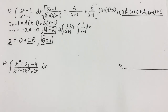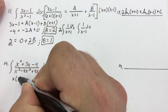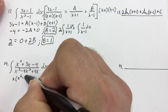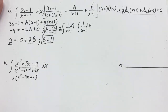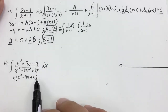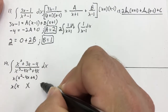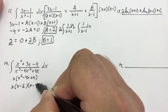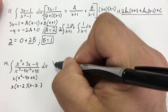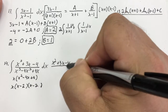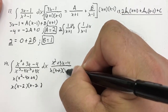Number 14 is another partial fraction decomposition. I'm going to factor out x, and that gives me x times (x² − 4x + 4), which factors to x times (x − 2) times (x − 2). This is a repeated factor — this one's a little tough. So I have (x² + 3x − 4) over x(x − 2)(x − 2).